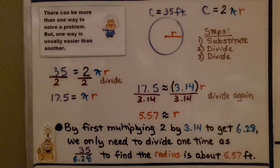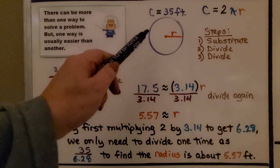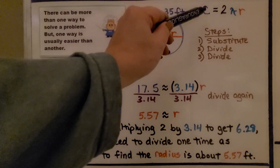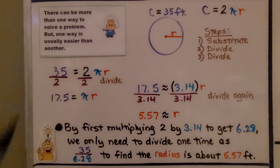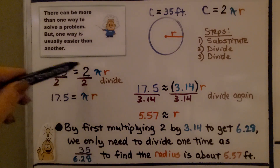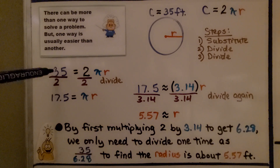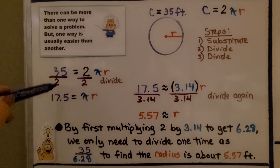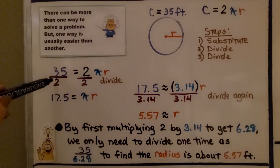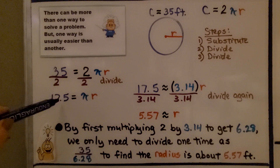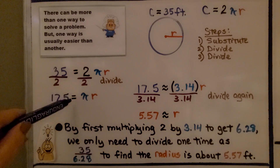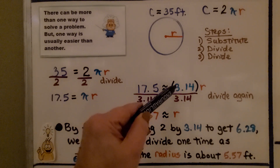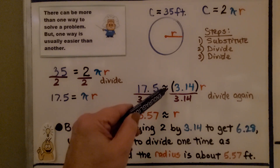As I always say, there can be more than one way to solve a problem, but one way is usually easier than another. Here we have our circle with a circumference of 35 feet. We know circumference equals 2πr. We substitute: 35 feet equals 2πr. We divide both sides by 2 — ignoring pi for now — and 35 divided by 2 is 17.5. So 17.5 equals πr. Now we turn pi into 3.14 and use an approximation symbol.